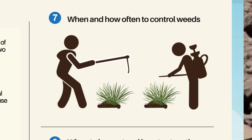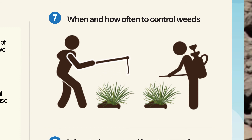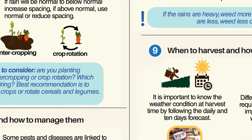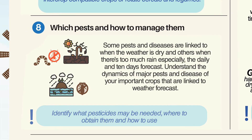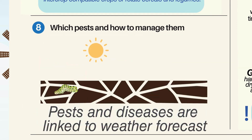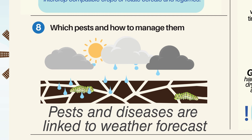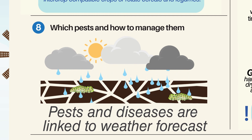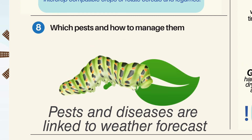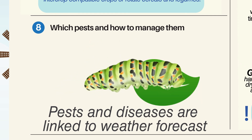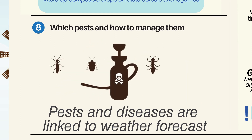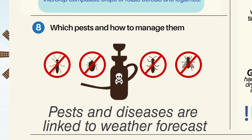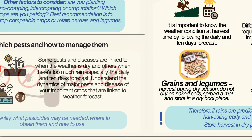Note: if the rains are heavy, weed more often, and if rains are less, weed less often. Which pests and how to manage them: Some pests and diseases are linked to when the weather is dry and others when there is too much rain, especially based on the daily and 10-day forecast. Understand the dynamics of major pests and diseases of your important crops that are linked to weather forecast. Identify what pesticides may be needed, where to obtain them, and how to use them.